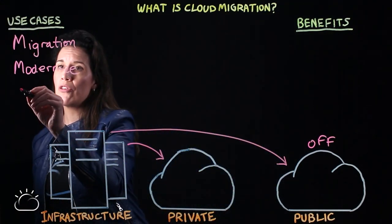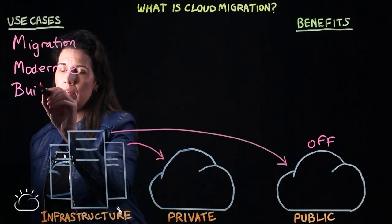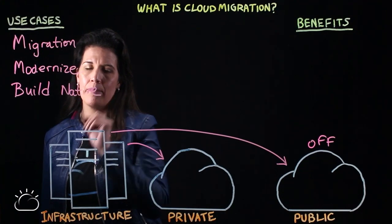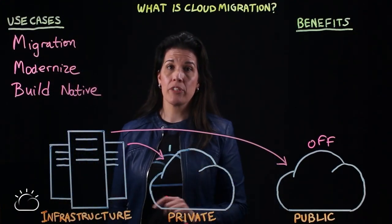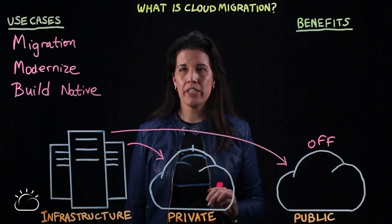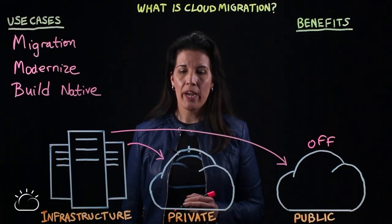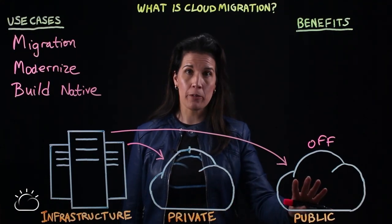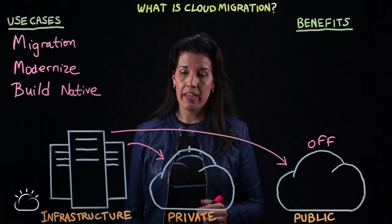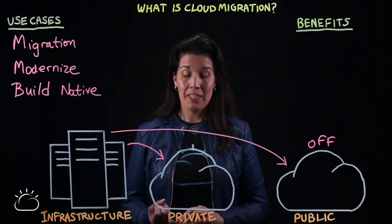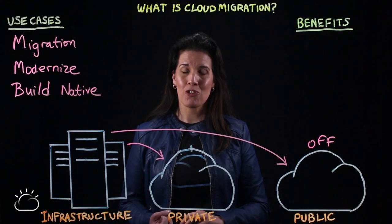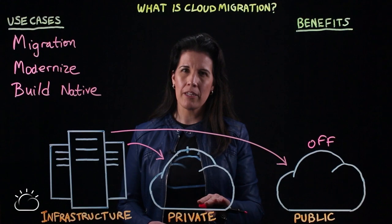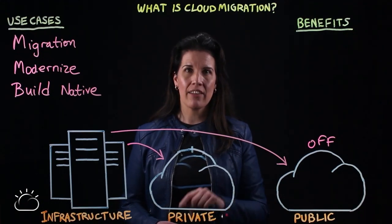And then we have our third use case: build native. For those workloads that live over here, if we have an opportunity to do things over in a way where we could design cloud-native apps to live either here or here, we would be able to infuse qualities like correlation IDs to track microservices and where traffic flows.